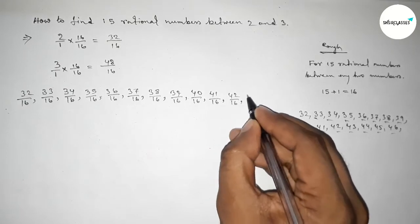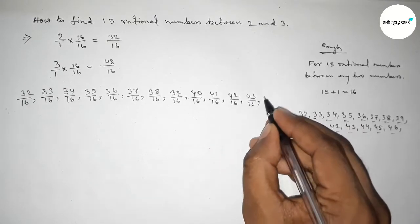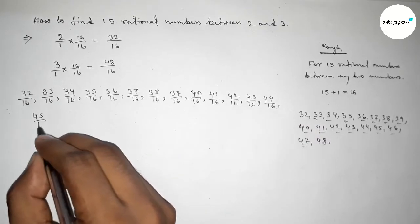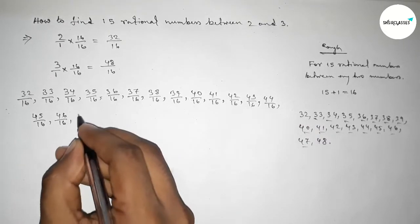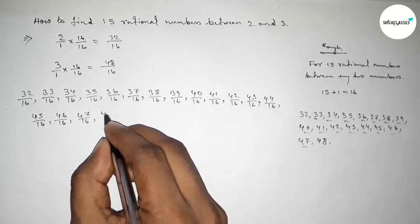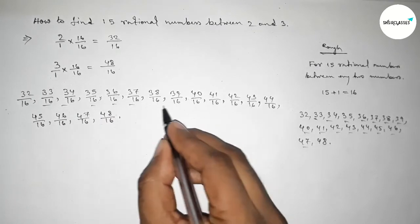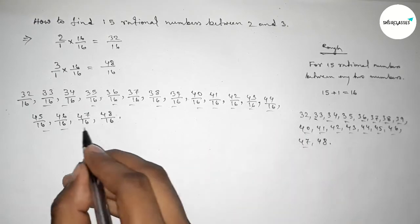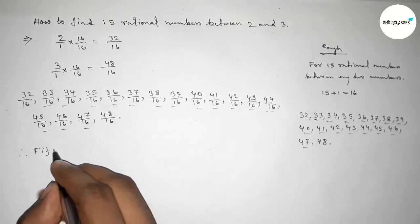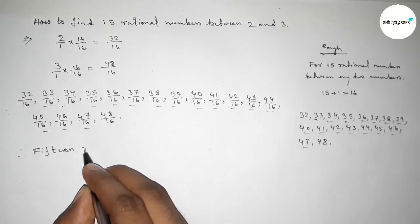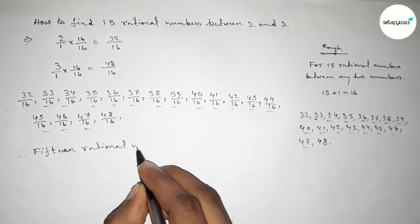So first of all write down here. We can get all the rational numbers by this way, and among these, these are the required 15 rational numbers between 2 and 3.